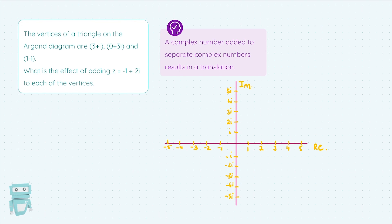So 3+i: 3 in the real axis, 1 up in the imaginary axis, there you go. I'll just use different colors for each of the vertices. 0+3i: 0 in the real axis, 3i up the top, there's the green one. And then the red one, 1-i: 1 in the real axis, -i down there, and that gives us our triangle.